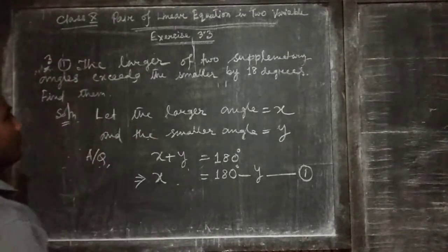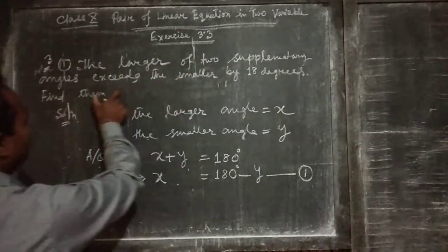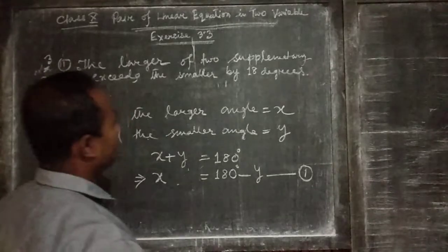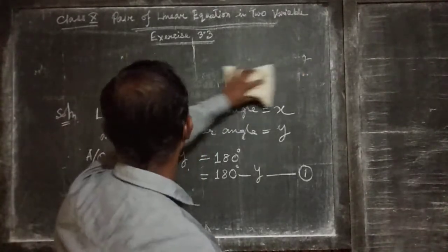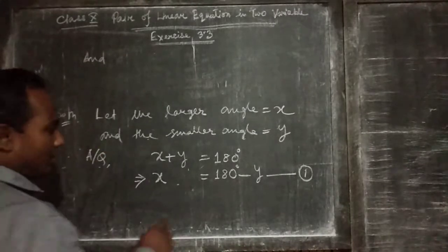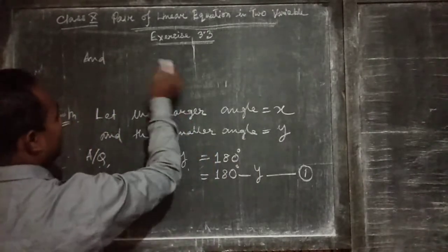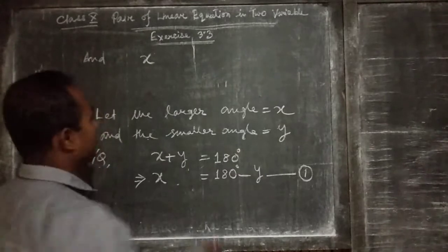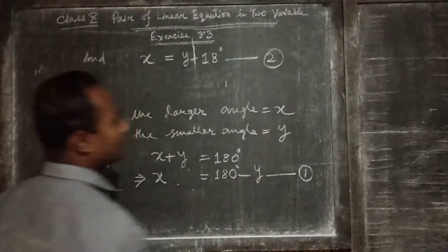Now for the second equation: the larger angle exceeds the smaller by 18 degrees. That means 18 degrees should be added to the smaller angle to get the larger angle. So according to the second condition, the larger angle x equals the smaller angle y plus 18 degrees. We label this as equation number 2.